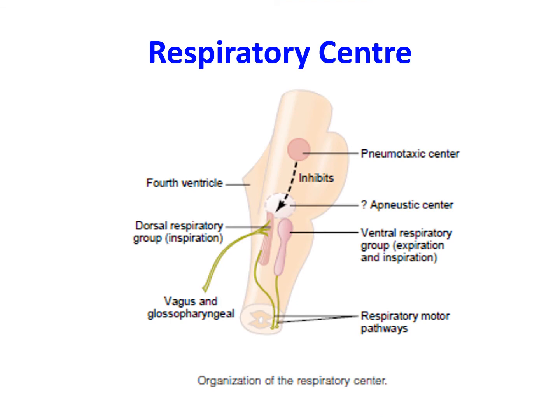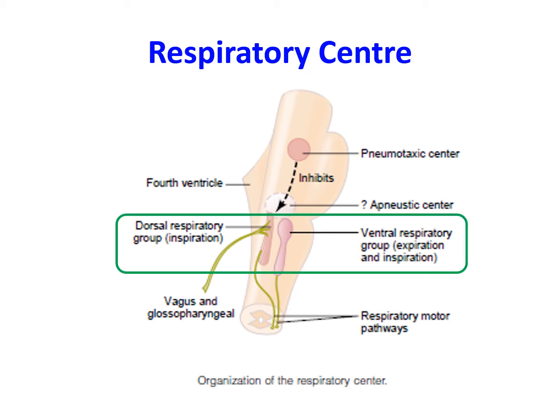Normal quiet breathing is called eupnea. The respiratory center is composed of a collection of neurons located bilaterally in the pons and medulla. These neurons are either inspiratory — they discharge during inspiration — or expiratory — they discharge during expiration. The inspiratory neurons are inhibited during expiration, while the expiratory neurons are inhibited during inspiration. The neurons are divided into medullary centers, which include the dorsal respiratory group and the ventral respiratory group, and pontine centers, which include the pneumotaxic center and the apneustic center.